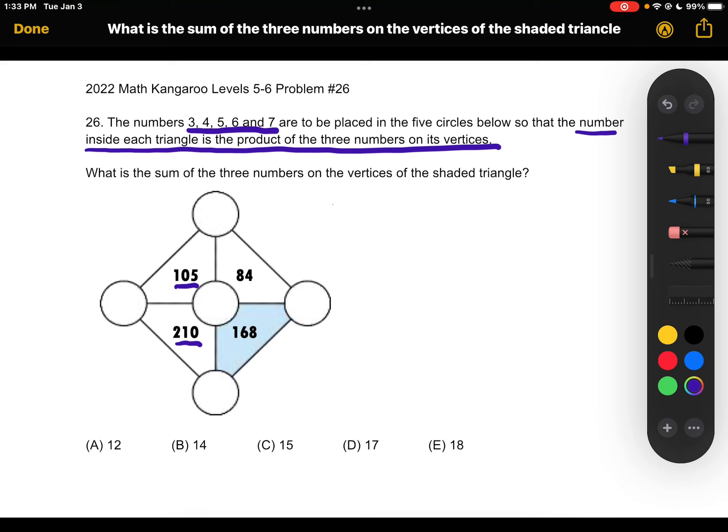So that means that 5 must be in the circle that is shared by both 105 and 210, and that circle is this one. So now we've placed the 5.